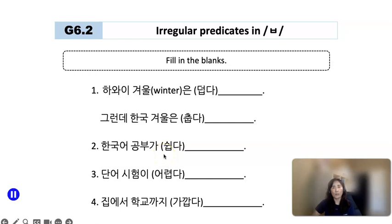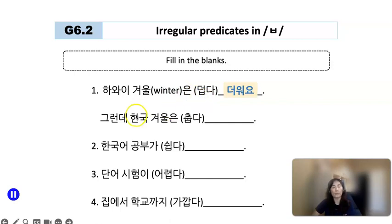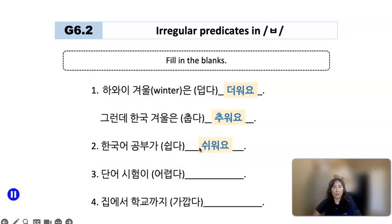Now I want you to fill in the blanks according to the context with the correct conjugation. Number one: Hawaii winter — 겨울은 어때요? 추워요 or 더워요? Then, 한국 겨울은 어때요? 추워요 — it's cold. 한국어 공부가 어때요? It's easy: 쉬워요.